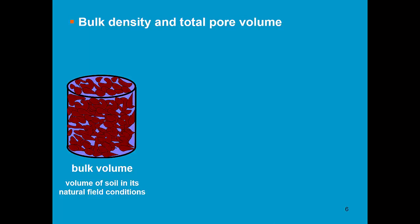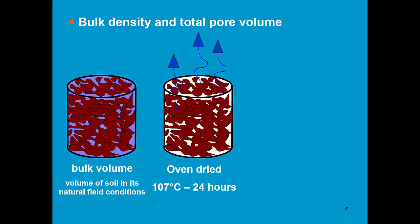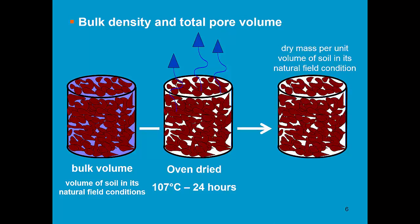To determine the bulk density, we bring our sample to the lab. We put it in an oven for 24 hours at 107 degrees to evaporate all the water. When it comes out of the oven, we can determine the dry mass per unit volume of soil as we found it in its natural field conditions. We have solid particles in the sample, and the solid particles have a density of 2.65 g per cm³. We also have soil pores, which have no density.